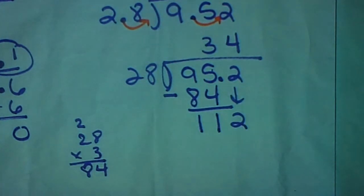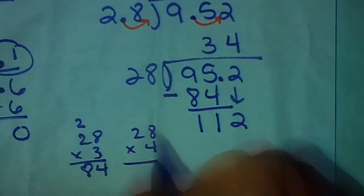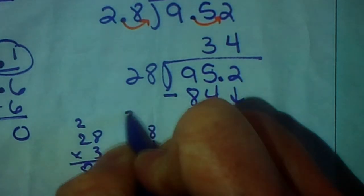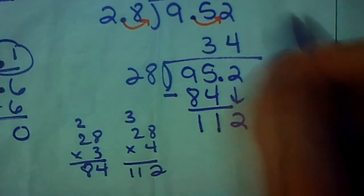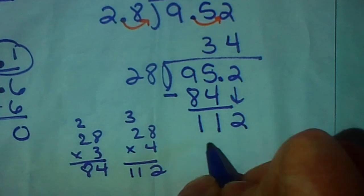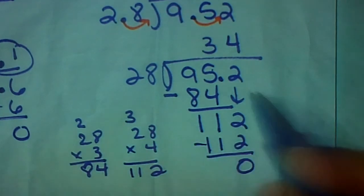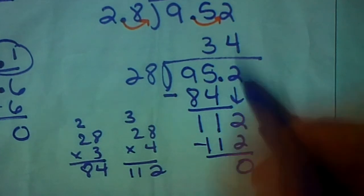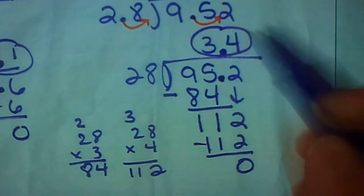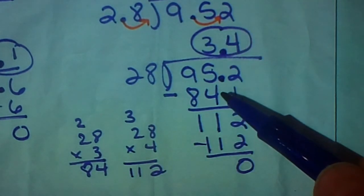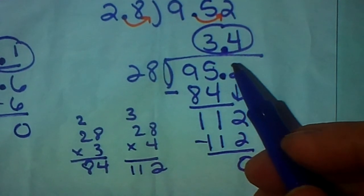So now, I need to take 28 times 4. 8 times 4 is 32. 4 times 2 is 8. Plus 3 is 11. Ooh, I like when that happens. So, we have 28 times 4, which is 112. When we subtract, we get 0 remainder. The answer is not 34, though. I need to take this decimal point and bring it straight up. So, 9 and 52 hundredths divided by 2 and 8 tenths is 3 and 4 tenths. Enjoy your Section 9 problems.